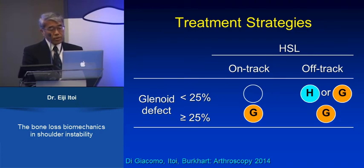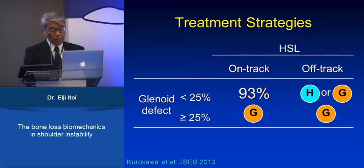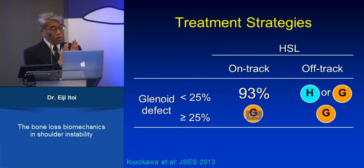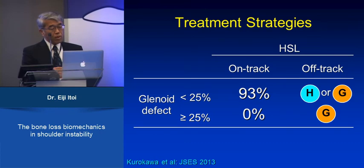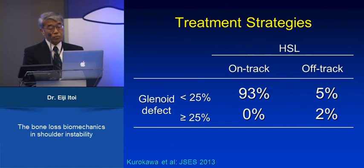In our series of 100 cases, 93% were on-track with a small glenoid defect, so we simply performed arthroscopic Bankart repair. The on-track large glenoid defect category was 0% in our series. Theoretically it exists, but if the glenoid defect is more than 25%, the glenoid tract becomes very narrow and all Hill-Sax lesions are off-track — there is essentially no such case as on-track Hill-Sax with large glenoid defect. The off-track small glenoid was 5%, and the off-track large glenoid defect was 2%, meaning these 7% of cases require additional consideration.